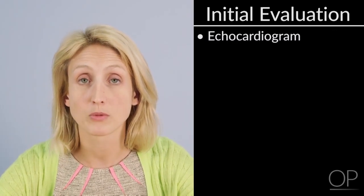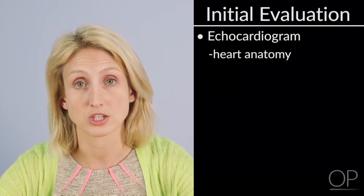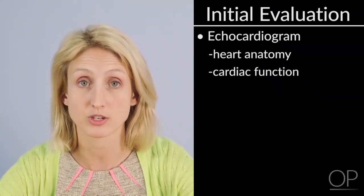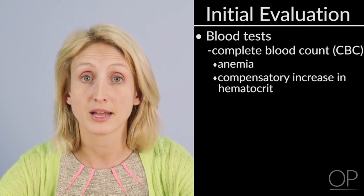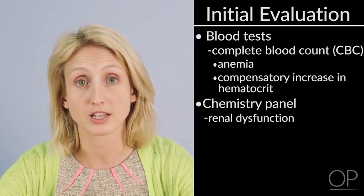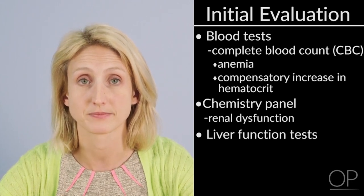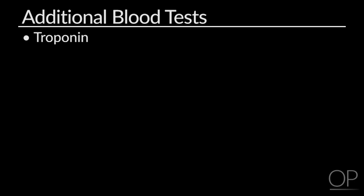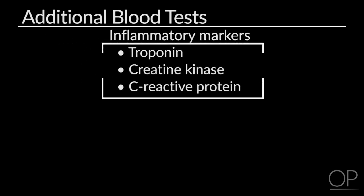The echocardiogram is likely the most helpful diagnostic tool in heart failure. Not only will it provide a complete anatomical survey of the patient, it also provides a functional assessment of both the right and left ventricle. Blood tests include a complete blood count to assess for anemia or compensatory increase in hematocrit seen in chronic low output or cyanosis, serum electrolyte abnormalities, blood urea nitrogen and creatinine for evidence of renal dysfunction, liver function tests, troponin, creatinine kinase, and C-reactive protein—inflammatory markers as well as markers directly released by the myocardium, helpful in identifying myocarditis or other inflammatory-induced myocardial diseases.